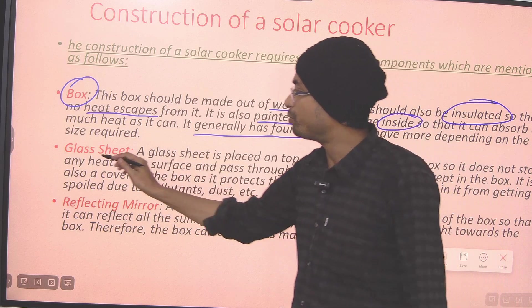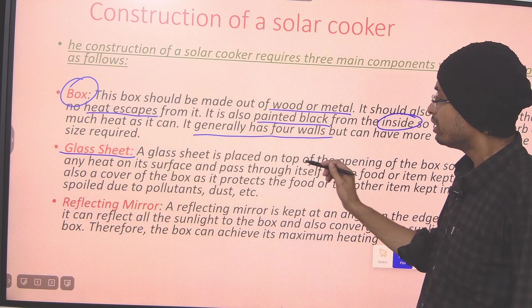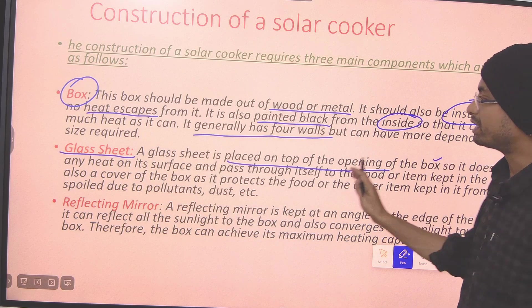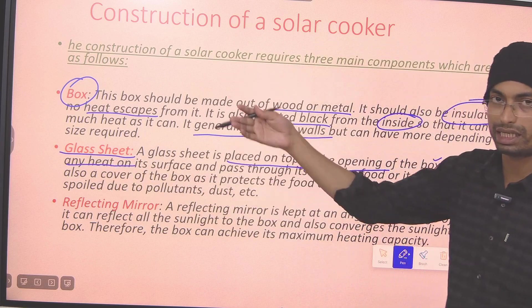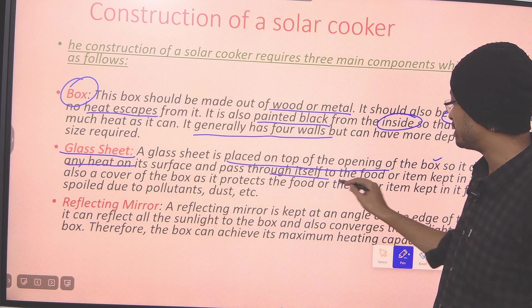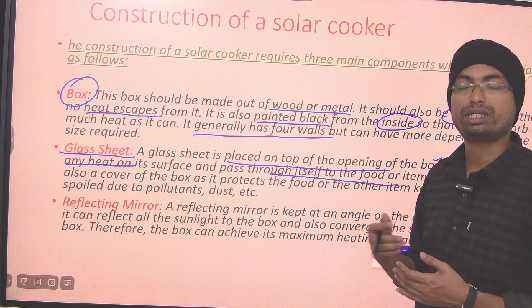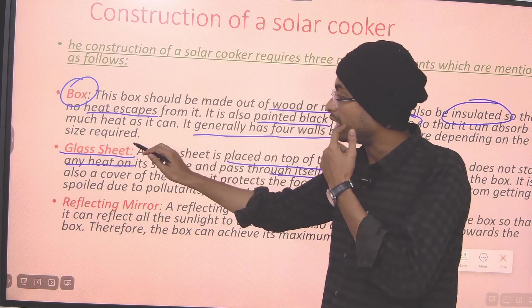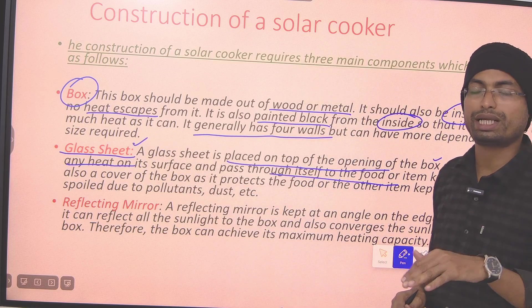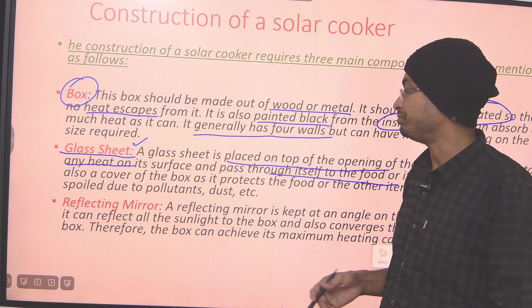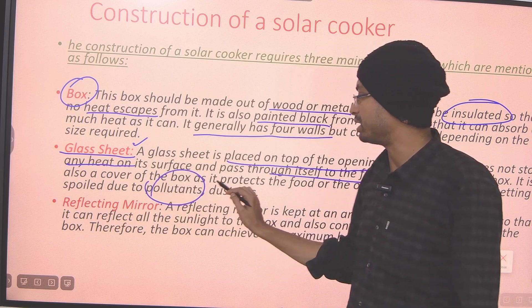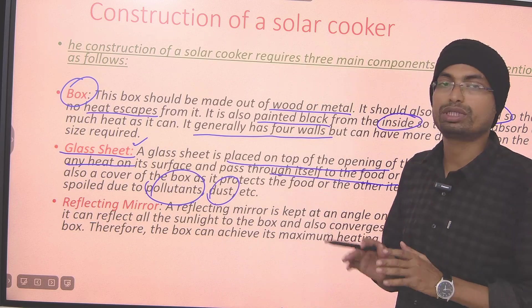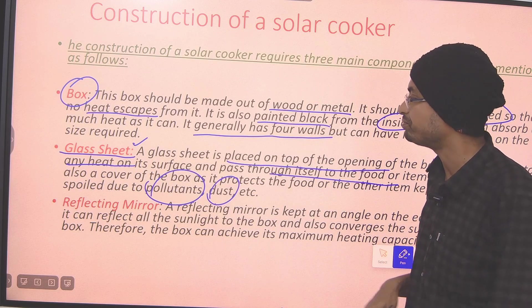So, what about the box? Now, in this figure, we can see a glass sheet. The glass sheet is placed on top of the opening of the box. And what does it do? It prevents any type of heat from escaping. Through itself, we keep the food. It will be warmed. Temperature will rise gradually. With this glass sheet, heat doesn't escape. Also, pollutants and dust particles will not get inside. It will be pollution-free, dust-free.